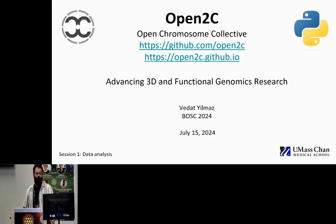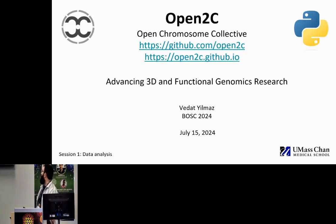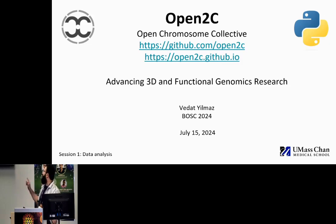Our core group of developers are located on the west coast — we have developers at USC — and on the east coast at UMass Chan Medical School and MIT. We also have developers at IMBA Vienna and FMI Basel. Additionally, we have three summer contributors funded by Google Summer of Code, from Peru, Vienna, and Turkey.